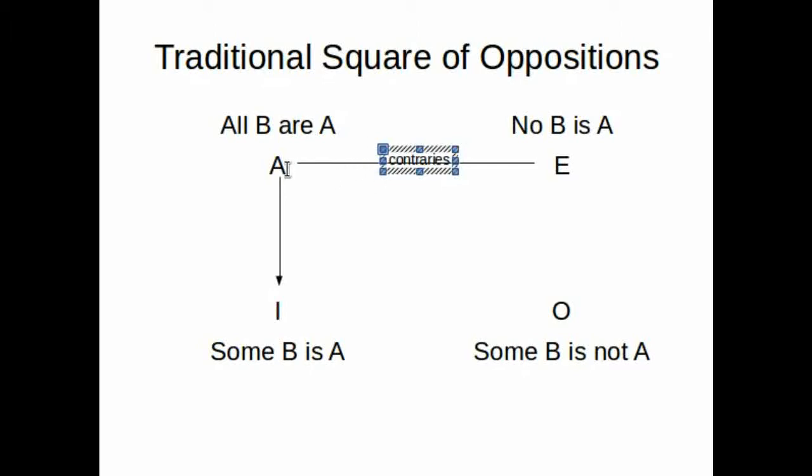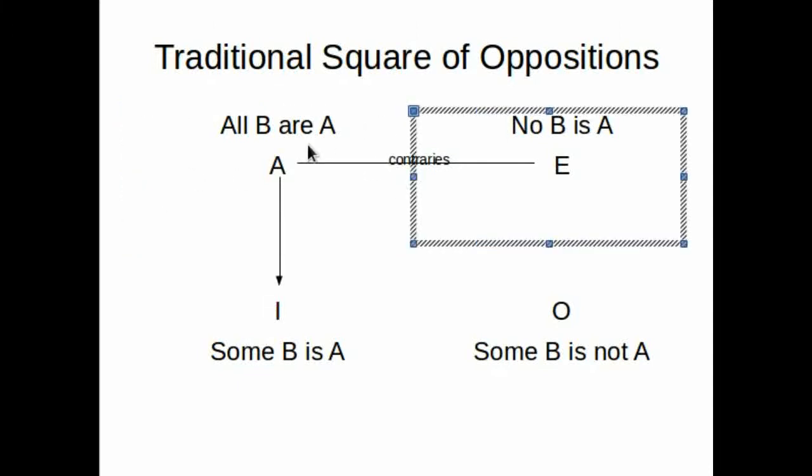Which means that if A is true, E is false. If E is true, A is false. They cannot be both true, but they could be both false.